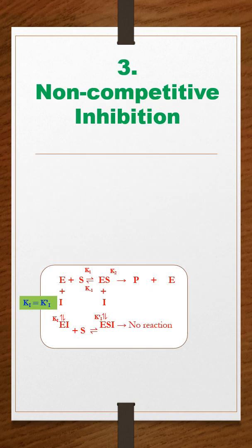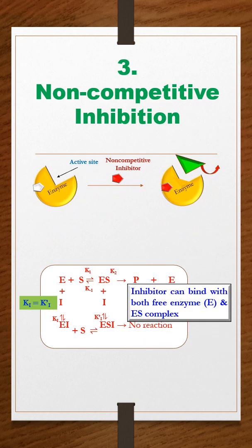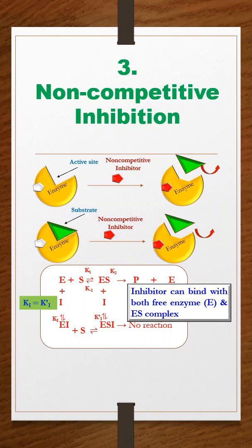In non-competitive inhibition, the inhibitor can bind with both the free enzyme and ES complex. The inhibitor binds to a site different from the active site and causes structural distortion of the active site, so inhibition occurs.